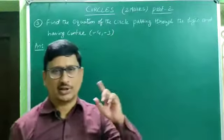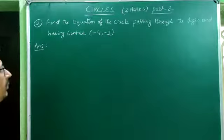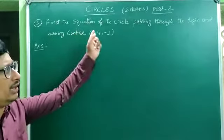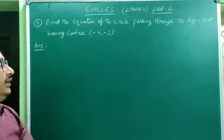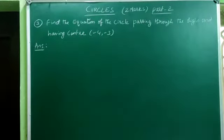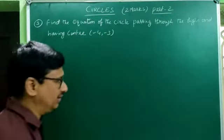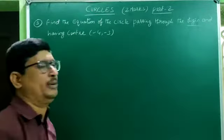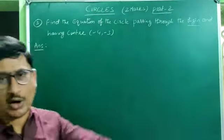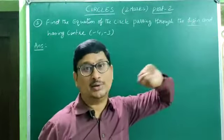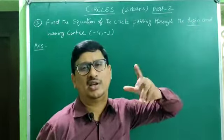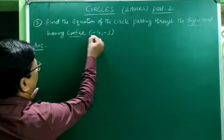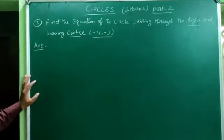Let's go to the next problem: find the equation of the circle passing through the origin and having center (−4, −3). We have to find the equation of the circle which passes through the origin. Origin means (0, 0).